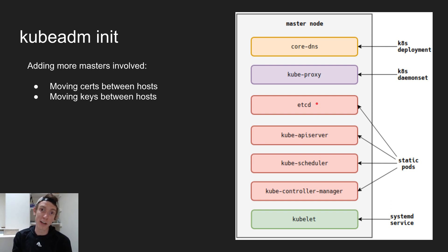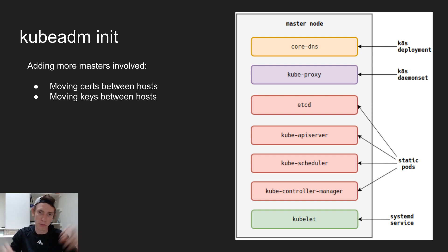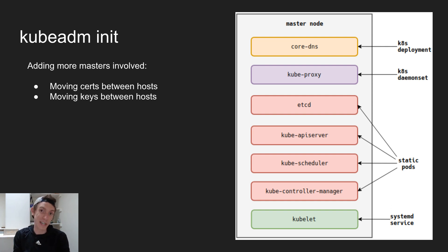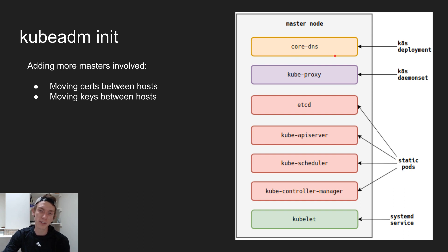By default, it will also run etcd. There is a way to externalize etcd, but for all intents and purposes with this example, we're going to run in a stacked master mode where we have the Kubernetes control plane components and the etcd components co-hosted on the same node. So not only will we be joining Kubernetes components together, but we'll actually be joining etcd together as well. Once all that's in place, it can deploy the KubeProxy daemonset, which sets up iptable rules or interacts with IPVS, and then CoreDNS, which provides our cluster DNS.